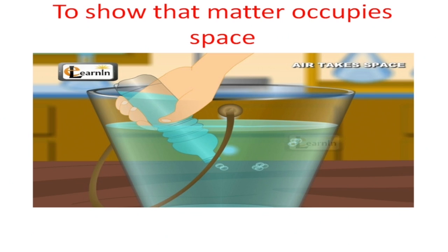What other substance around you occupies space? Look at your books placed on the table. If you place the books all over the table and you want to place a cup of tea, where will you put it? You realize there will be no space, because the books have occupied the space. They have taken up the space you would have used to place your cup of tea. So this is another form or state of matter which occupies space.